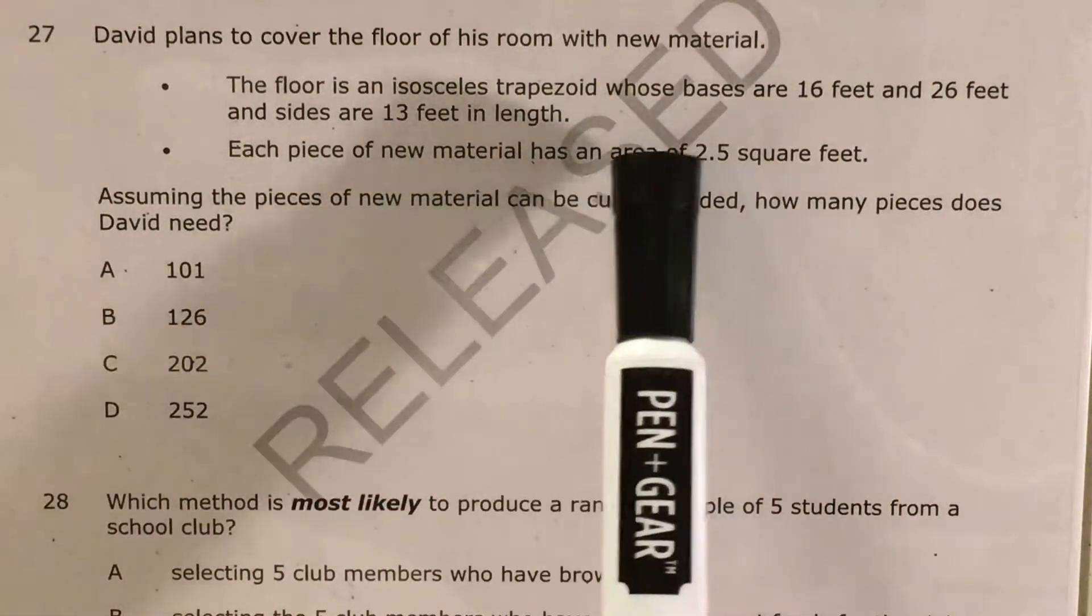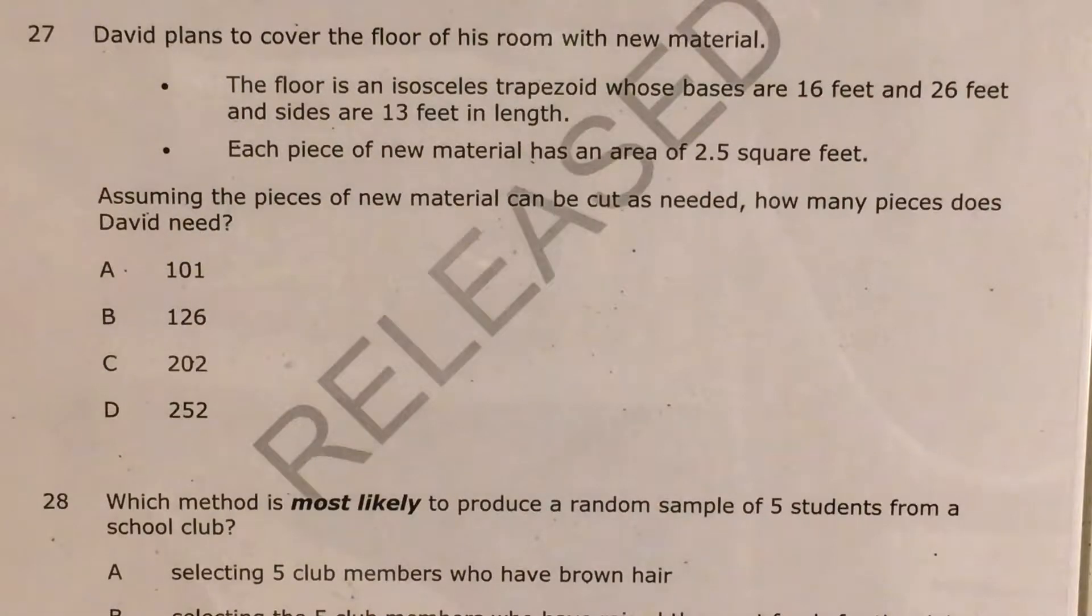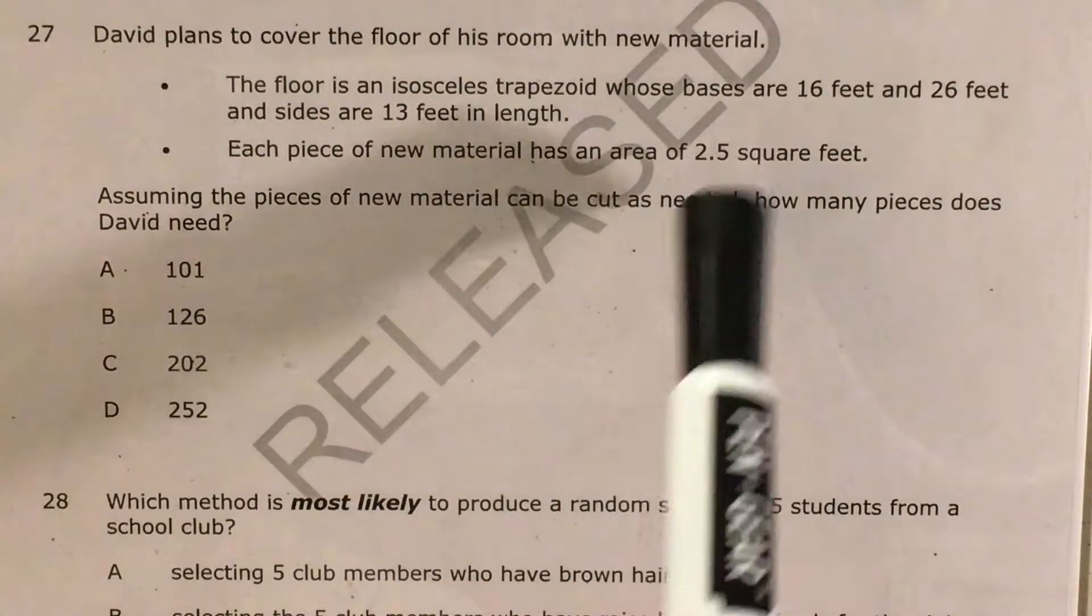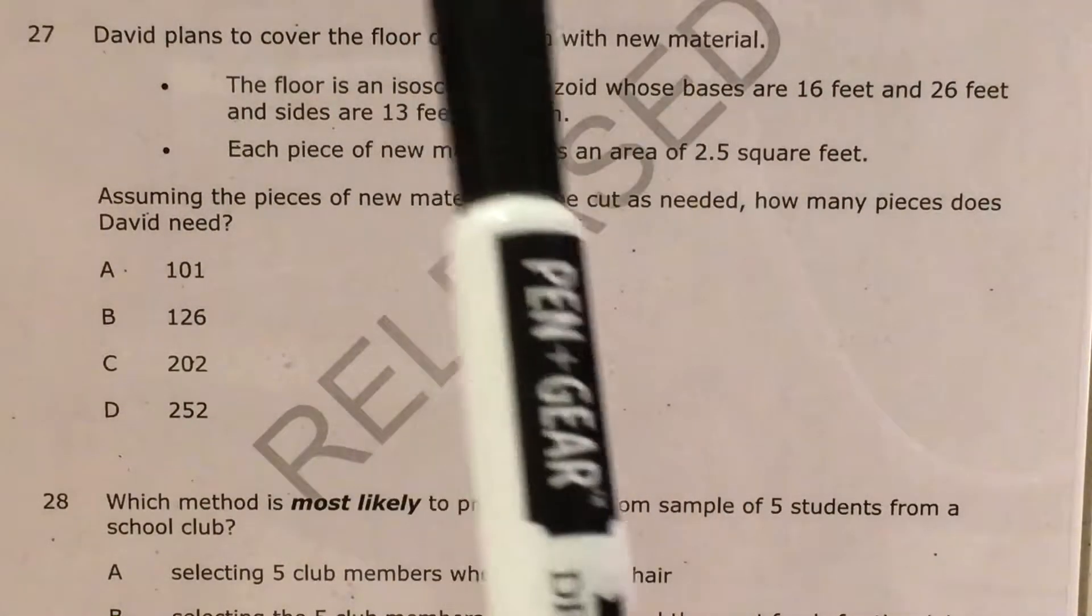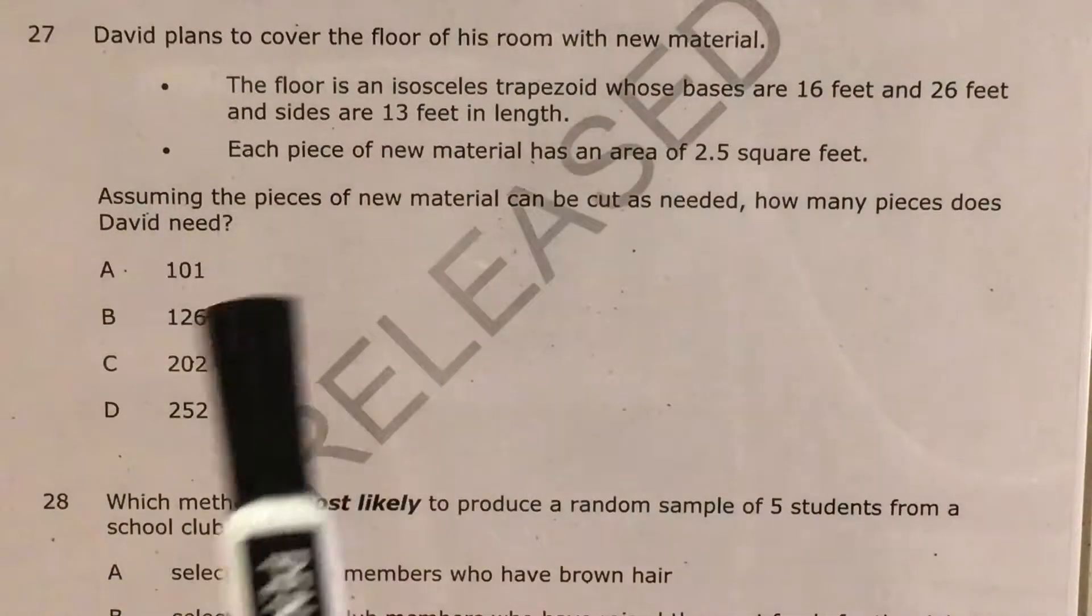Each piece of new material has an area of 2.5 square feet. We're assuming the pieces of new material can be cut as needed, which means we're not thinking of them just as squares or triangles or anything like that. We're trying to figure out how many pieces David needs.